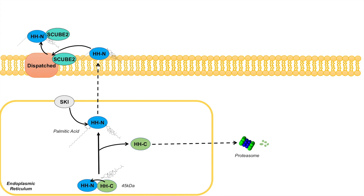This is the first mechanism of hedgehog protein release. The first mechanism is the hedgehog protein with its two moieties being acted on by Dispatched, and the SCUBE2 protein attaching to the hedgehog protein. The hedgehog N-terminal and the SCUBE2 proteins then get released together — that is the first mechanism of release of the hedgehog proteins.